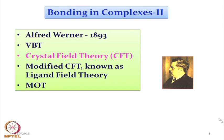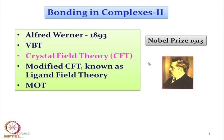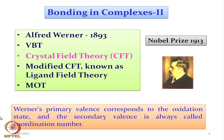Alfred Werner, who proposed the concept of this complex formation and two types of bonding, and immediately after about 20 years, he got the Nobel Prize for this idea of getting this complex species in solution as well as in the solid state. He proposed two things: one is the primary valence, and the second is the secondary valence.